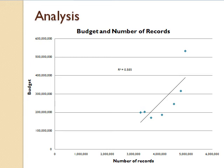This graph shows the relationship between budget and number of records. On the x-axis is the number of records, while on the y-axis is the IT budget. The r-squared value is 0.59, which indicates a moderate correlation between budget and number of records. As the number of records increased, the monetary budget value increased as well, as seen in the graph.